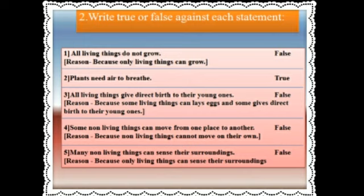Third one: all living things give direct birth to their young ones. This statement is false, because some living things lay eggs. Fourth one: some non-living things can move from one place to another. This statement is also false, because non-living things cannot move on their own. When we apply force on them, then they can move — for example, when we push a chair, it moves.